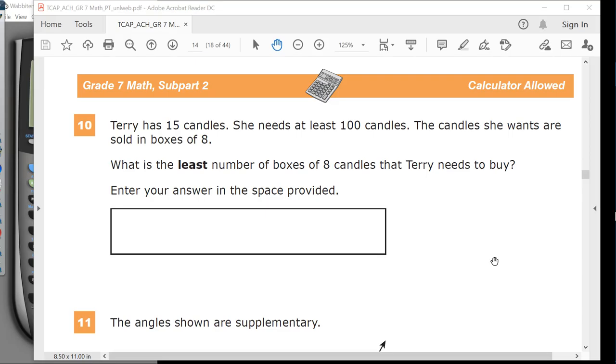Terry has 15 candles. She needs at least 100 candles. Classic Terry, right? Never remembering to bring her candles. You know how it goes. Anyway, the candles she wants are sold in boxes of 8.